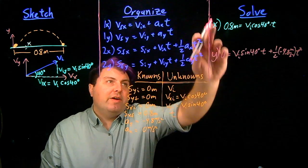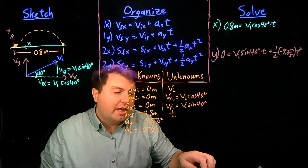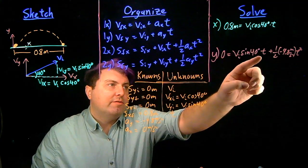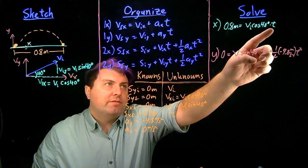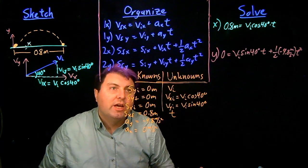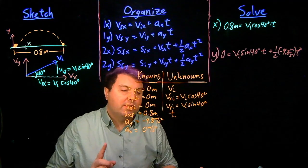Okay, so now I have two equations, and now I'm down to just two unknowns. I don't know vi, I don't know t, but it's just vi and t. And so I can solve for one and substitute it into the other.